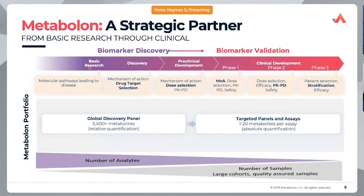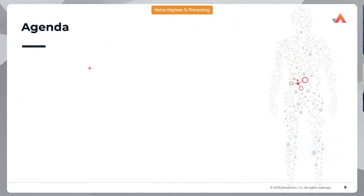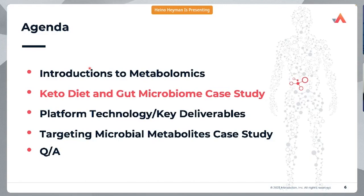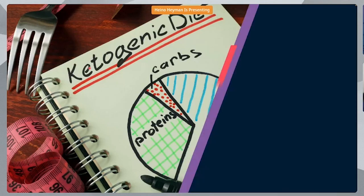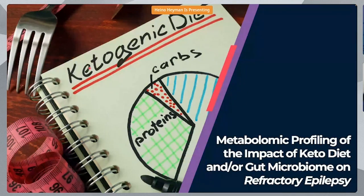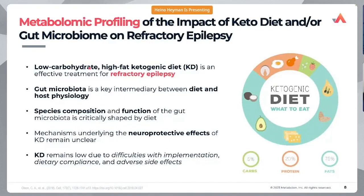The first case study involves metabolic profiling of the impact of the ketogenic diet and the gut microbiome on specifically refractory epilepsy. It is well known that a low-carbohydrate, high-fat ketogenic diet is an effective treatment for refractory epilepsy. We also know that the gut microbiome is a key intermediate between diet and host physiology, and metabolomics captures the microbiome's impact on a biological system very well.